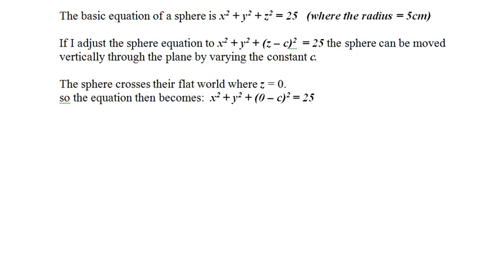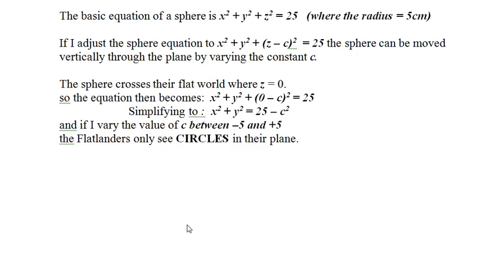The sphere crosses their flat world where z equals zero, so the equation then becomes x² + y² + (0 - c)² = 25. Simplifying to x² + y² = 25 - c². And if I vary the value of c between -5 and +5, the flatlanders only see circles in their plane.